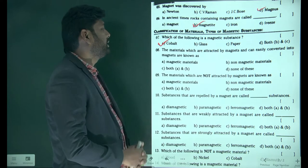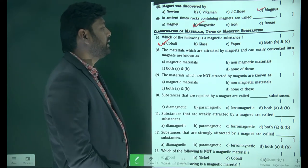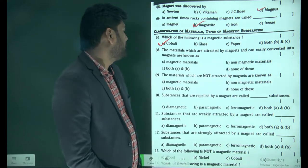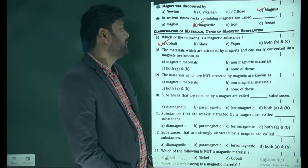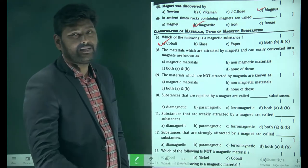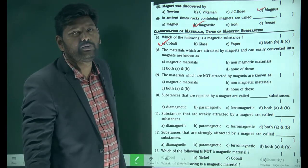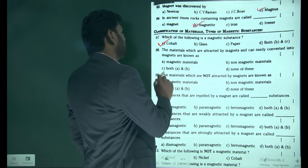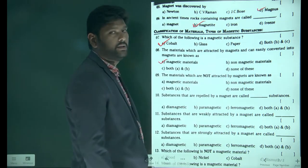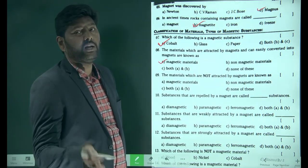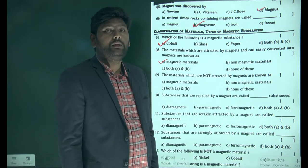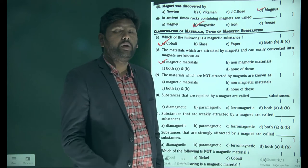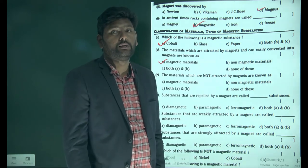The materials which are attracted by magnets and can easily be converted into magnets are known as magnetic materials. Magnetic materials — we can make them into magnets and we can influence them.